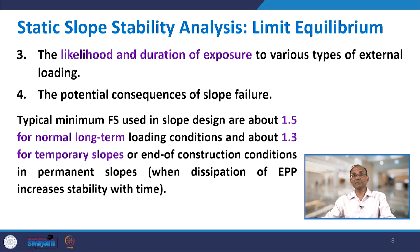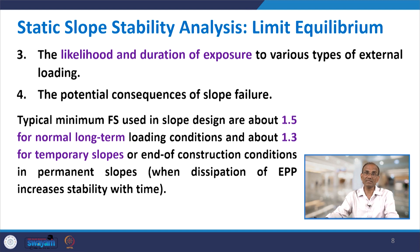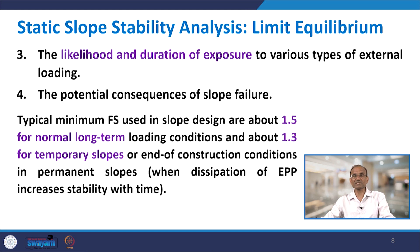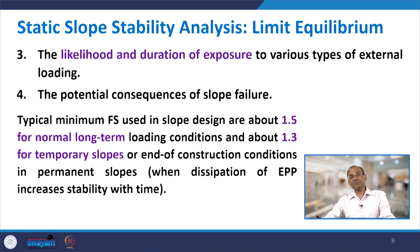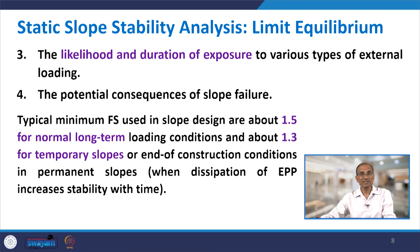Typically, the minimum factor of safety used for slope design in the static case is at least 1.5 for normal long-term loading conditions and about 1.3 for temporary slopes or end-of-construction conditions in permanent slopes. In any case, the factor of safety should not be less than 1.3. Even if it is quite high, such as 2, that is perfectly acceptable.